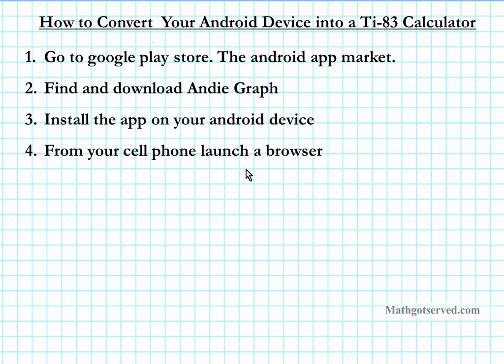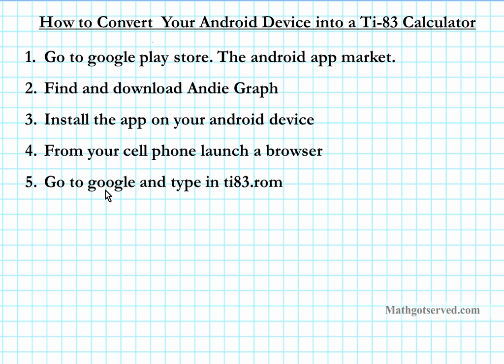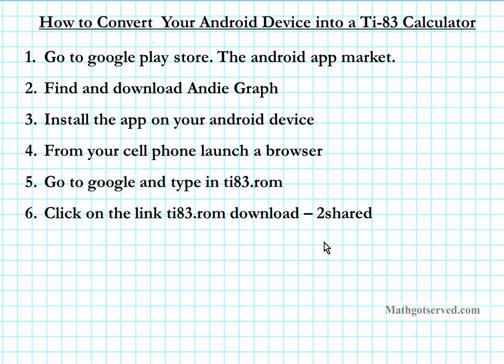Next, you are going to launch a browser on your cell phone or android tablet. Go to Google and search for the ROM by typing in TI-83.rom. The Andygraph program can play other TI ROMs, but this is the easiest one to find. When you search TI-83.rom on Google, it will take you to a link entitled download-to-shared, which is the most reliable source for getting your TI-83.rom.